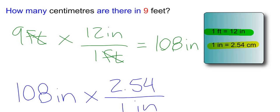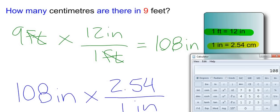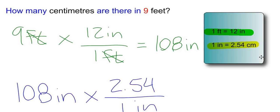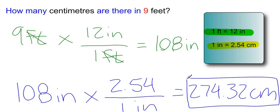So, pulling up my calculator: 108 times 2.54 equals 274.32. So 108 inches is equivalent to 274.32 centimeters. And because 9 feet is the exact same thing as 108 inches, there are 274.32 centimeters in 9 feet.